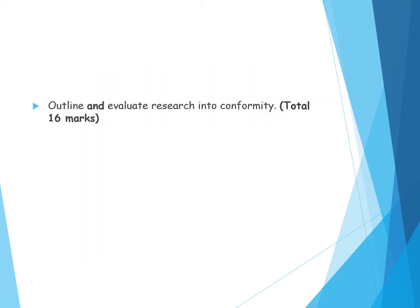To get a 16-marker — 'outline and evaluate research into conformity' — your first AO1 paragraph would be Asch's original study: describe aims, procedure, findings, and conclusions, getting key facts and figures in there such as 123 males, 12 out of 18 trials being critical trials, the reference line, confederates giving the wrong answer, and what percentage conformed. Then move to a second AO1 paragraph covering the three variations affecting conformity: group size, unanimity, and task difficulty. Then pick three to four evaluation points showing a range of detail, incorporating issues and debates and keywords from other topics such as cultural bias, beta bias, androcentric, and gender bias.